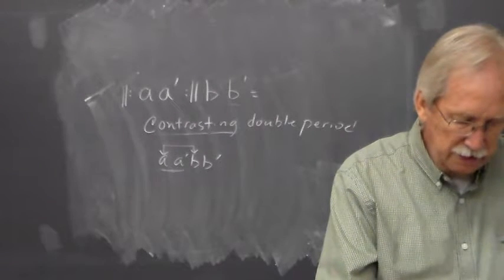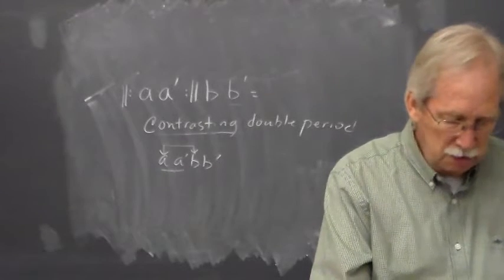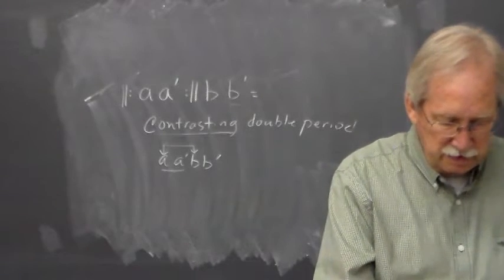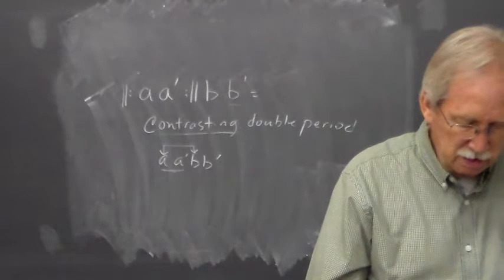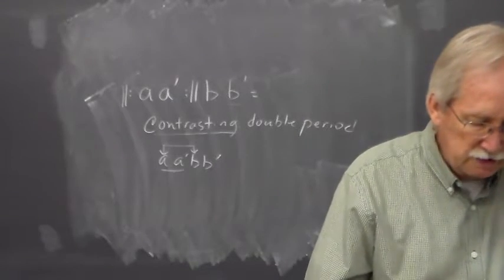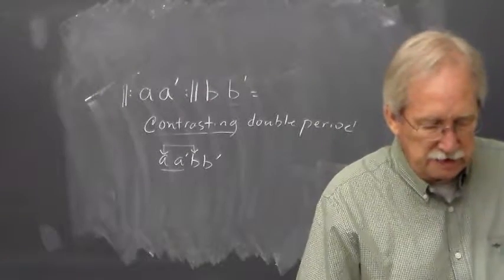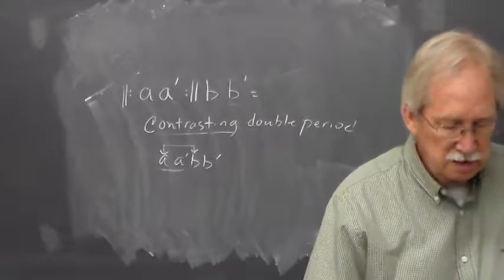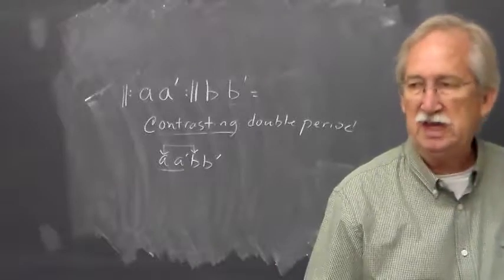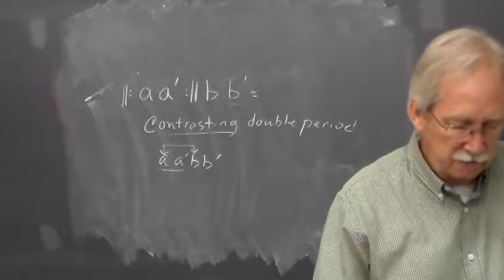Number 33 would be clearly a parallel period — two phrases, with the first measure of each being parallel, so that would be A, A prime. Number 114 is another one that is very clear. This has three four-measure phrases that are all contrasting, so it would be A, B, C as far as designating each phrase with a lowercase letter — and therefore it would be a phrase group.